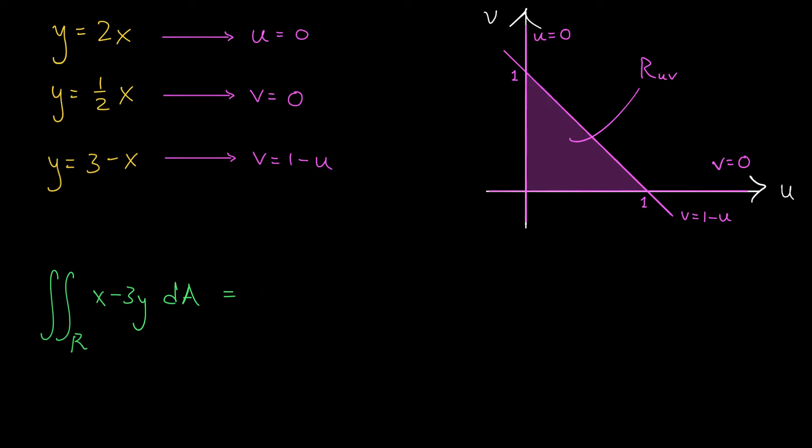You should be a little bit excited here because our old region was this skewed triangle that was neither type 1 nor type 2. But this new region r_uv is actually both. It's type 1 and it's type 2. So I'm going to go ahead and set up my integral by treating r_uv as a region of type 1.